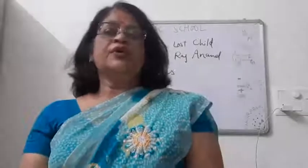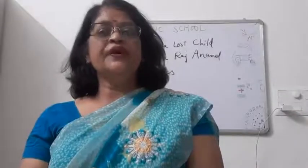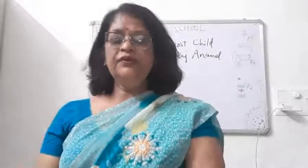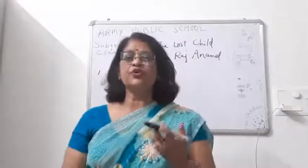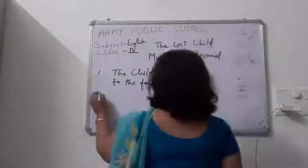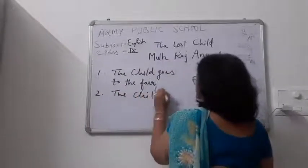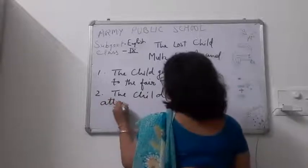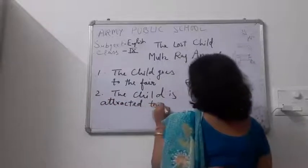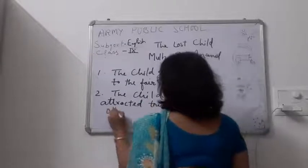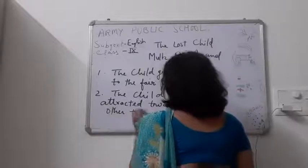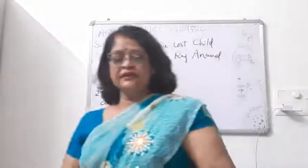The little boy wanted the toy. He was a little boy who wanted to have the toys, but his parents could not buy them. So they asked him to look at other things. The parents straightaway refused and told him they were not going to buy those toys. The poor child was helpless. The second point is that the child is attracted towards other things.